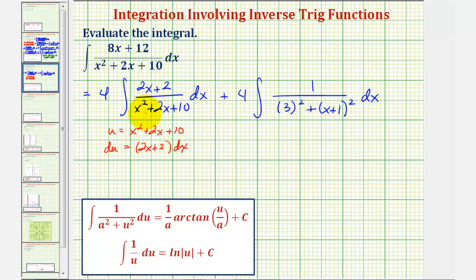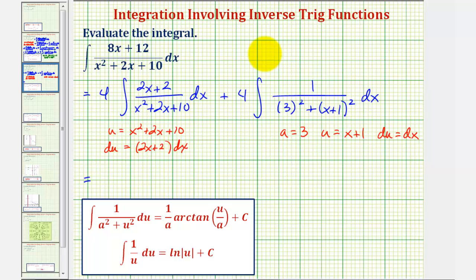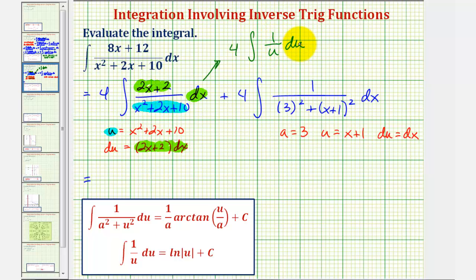For the first integral, u equals x squared plus two x plus 10, and therefore differential u equals two x plus two dx. Writing the first integral in terms of u, we have four times the integral of one over u du, and therefore the antiderivative is four times the natural log of the absolute value of u, where u equals x squared plus two x plus 10.